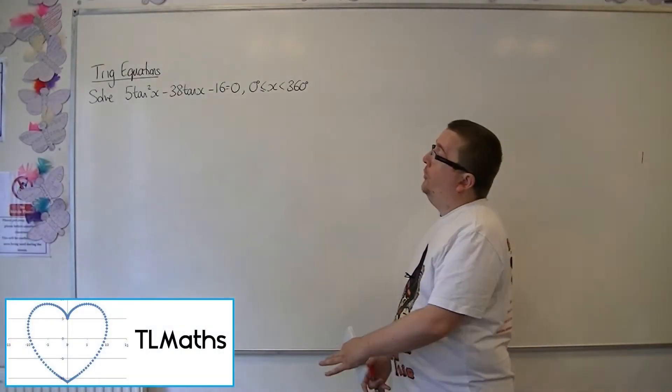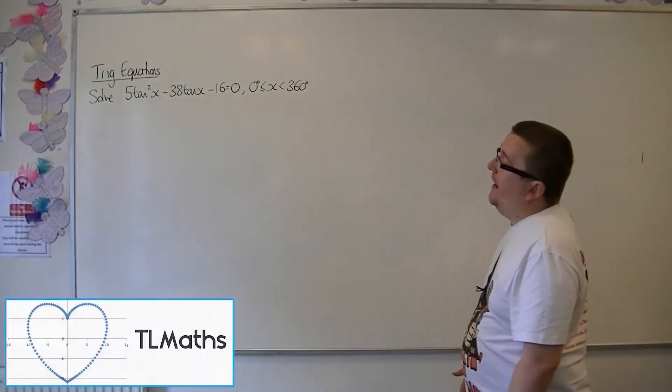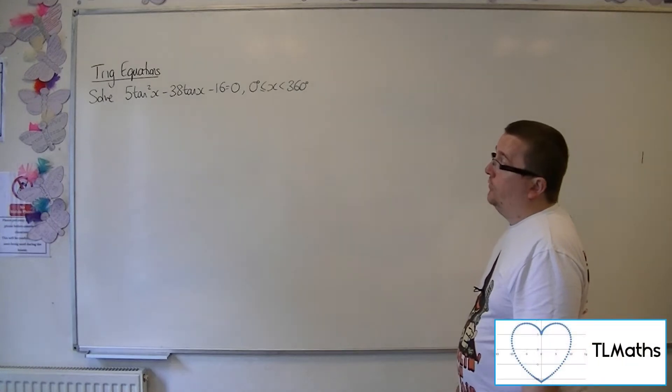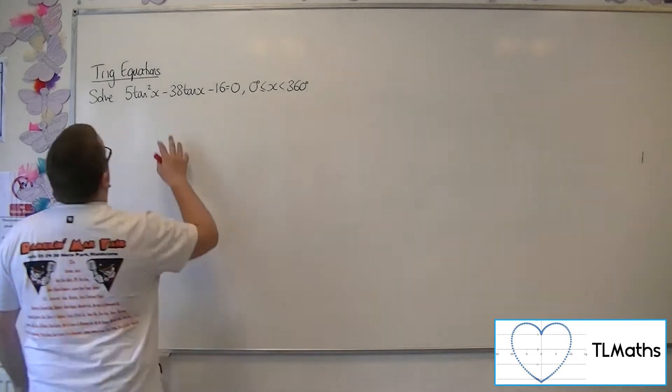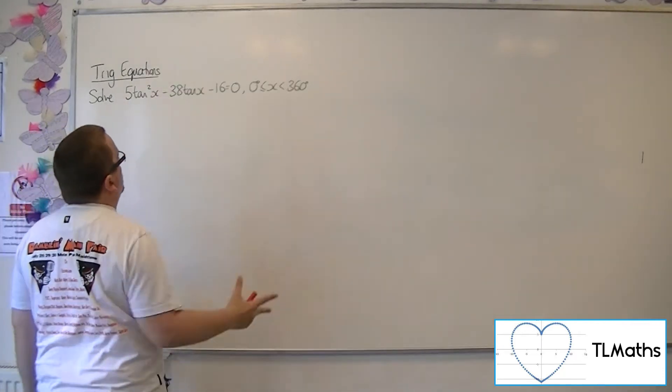Okay, so let's say I want to solve 5 tan squared x minus 38 tan x minus 16 equals 0, between 0 and 360 degrees. So this is another quadratic.